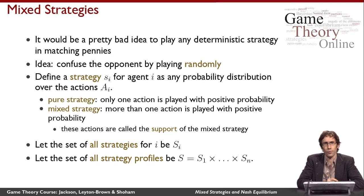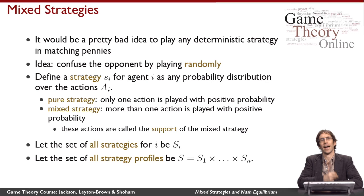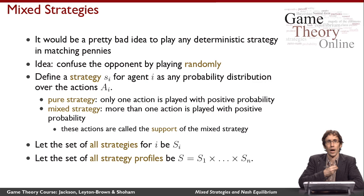Let's try to make this idea formal. Before, we talked about the idea of pure strategies, which we equated to playing actions. Now let's think of things in terms of probability distributions. A strategy for an agent is any probability distribution over the actions available to that player. A pure strategy is the special case where I play only one action with positive probability. A mixed strategy means I play more than one action with positive probability, like in my example with matching pennies.